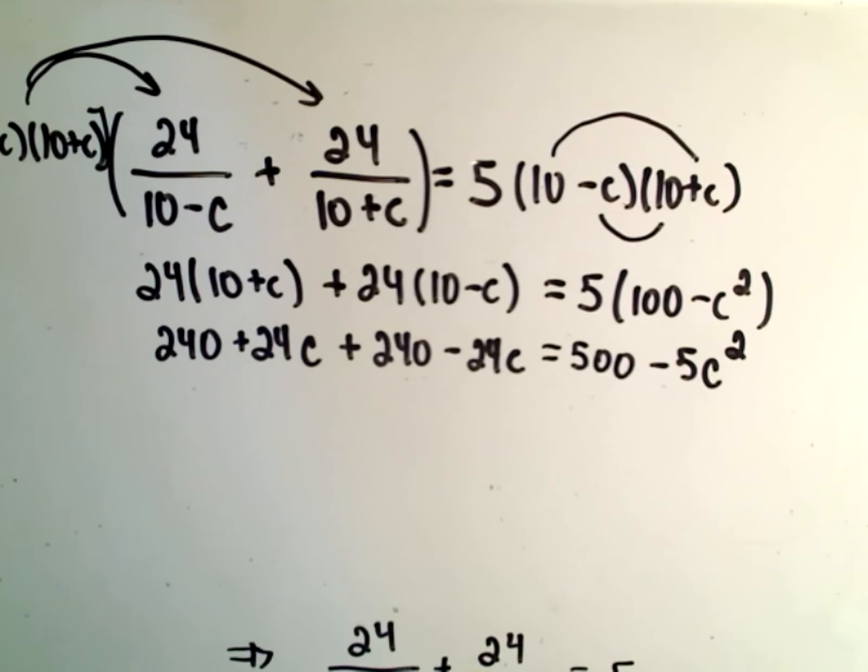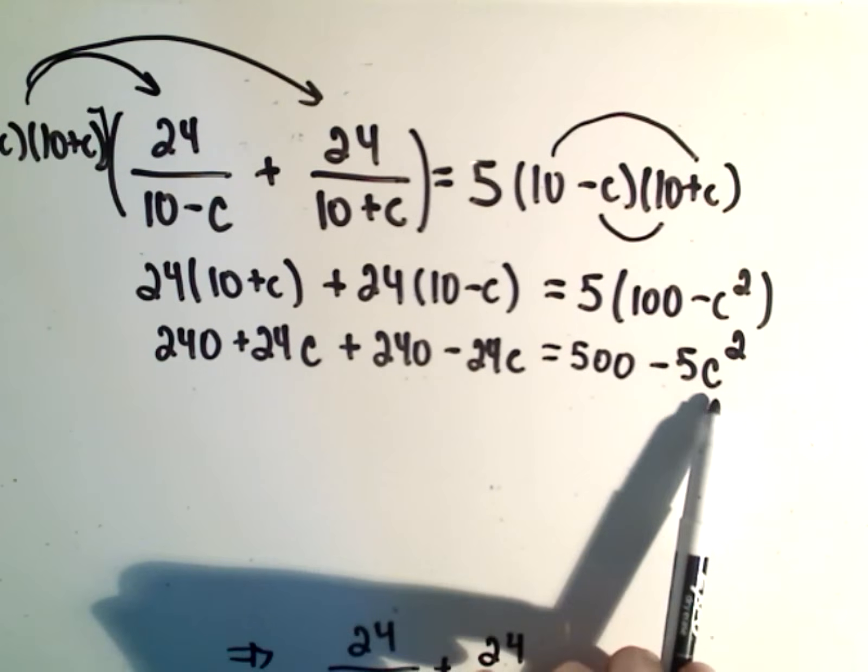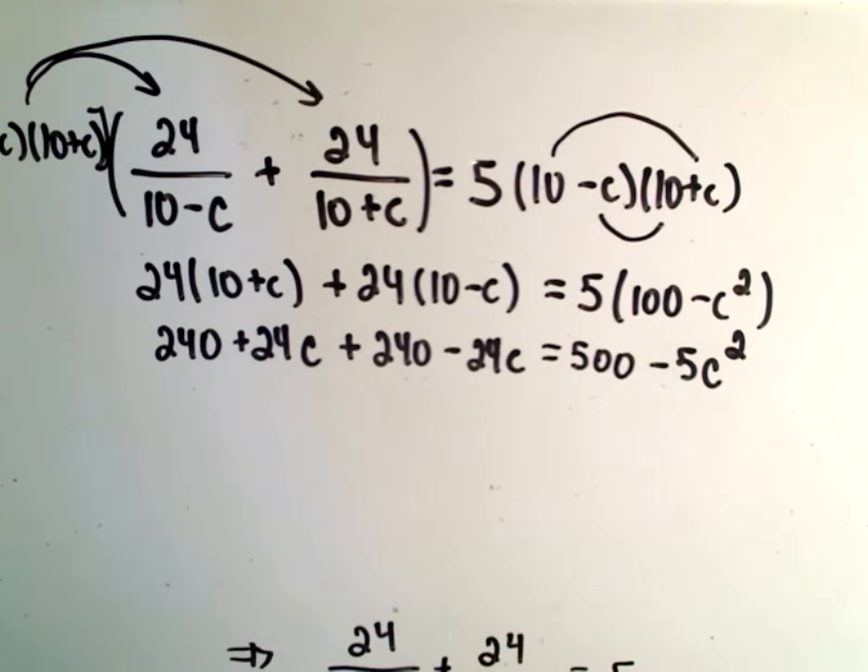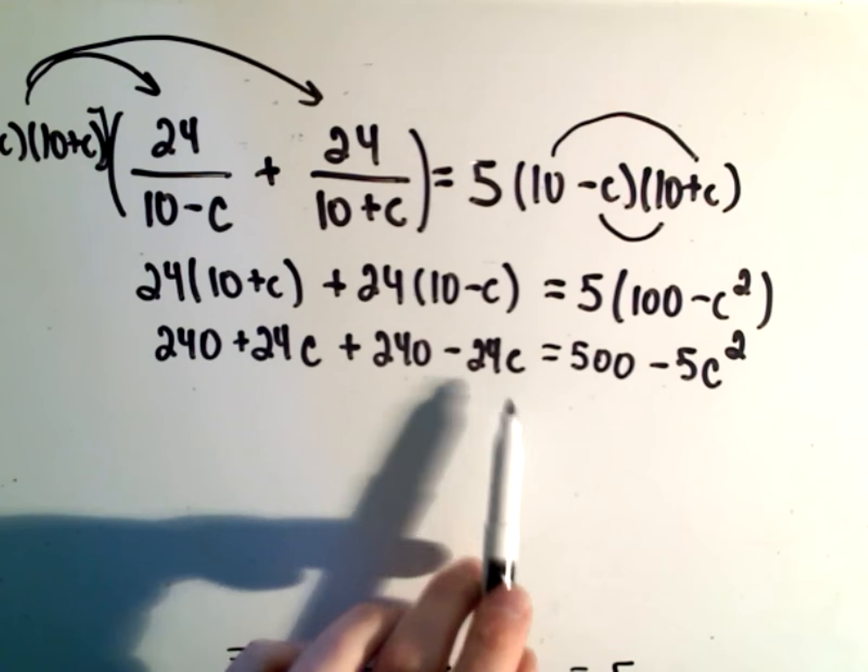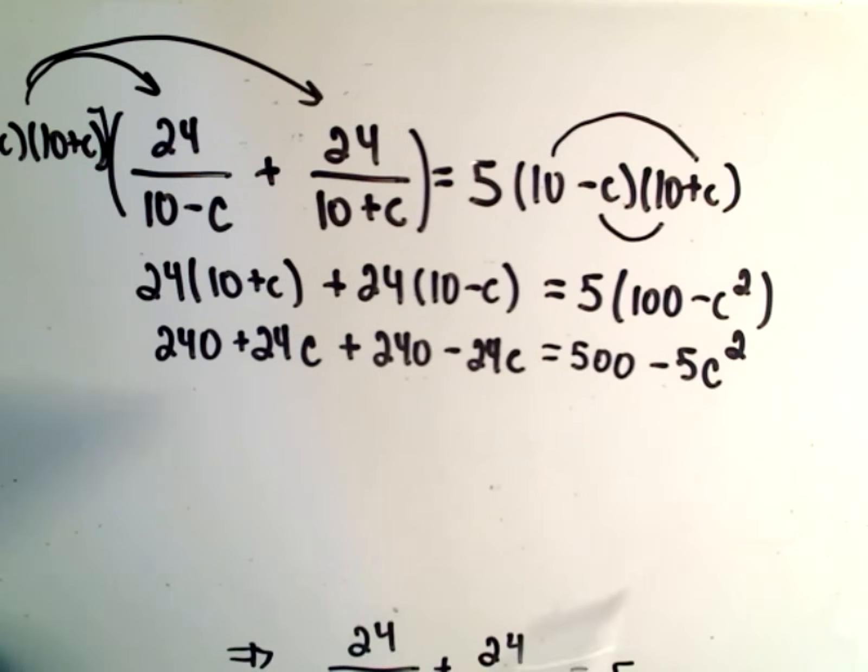So this is now a quadratic equation. I have a C squared term and I have a C to the first, which we don't have to have. Likewise, we have a number, which we don't have to have. But this C squared tells me it's a quadratic.